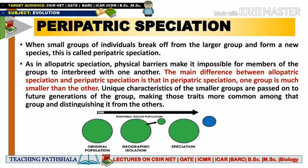As in allopatric speciation, the physical barrier makes it impossible for members of groups to interbreed. The main difference is that in peripatric speciation, one group is much smaller than the other. In allopatric speciation the isolated population is large in size, but in peripatric speciation it is very small. The unique characteristics of the small group are passed on to future generations, distinguishing it from the others.